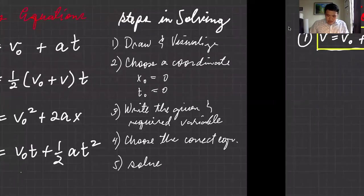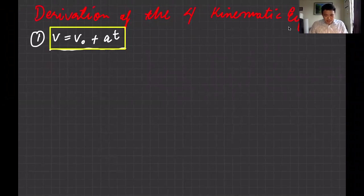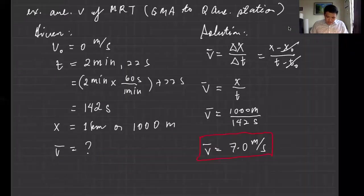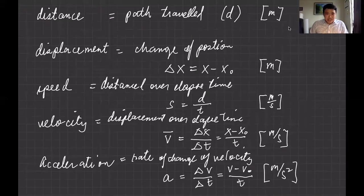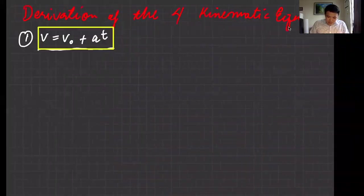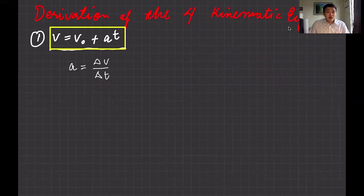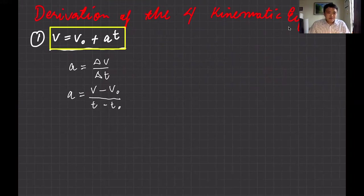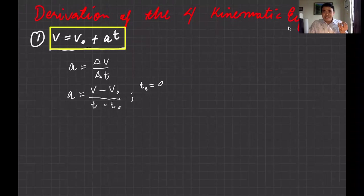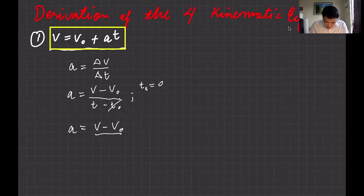Let's start with equation number one: v equals v-naught plus at. It started with the definition of acceleration. Acceleration is delta-v over delta-t. So the definition of acceleration is delta-v over delta-t, and we know that delta means change — final minus initial over t minus t-naught. We usually start at t equals zero, so the initial time is zero and we can cancel that, giving us a equals v minus v-naught over t.